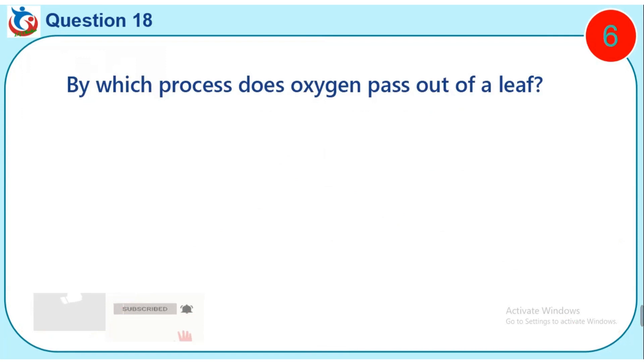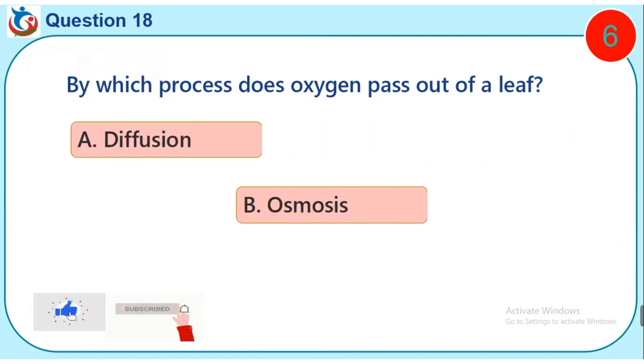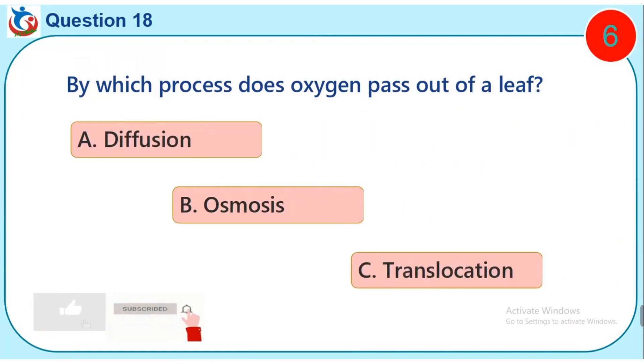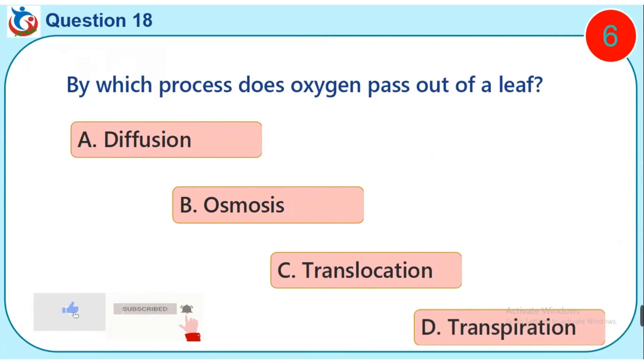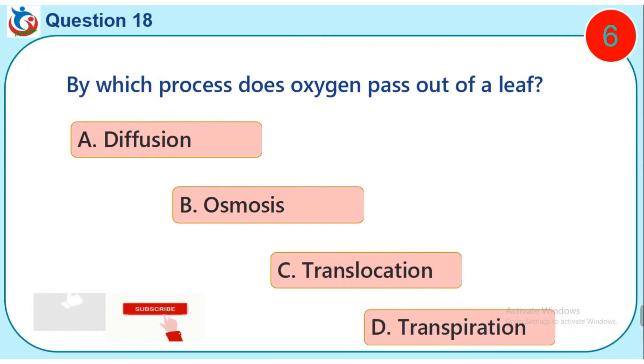Question 18. By which process does oxygen pass out of a leaf? A. Diffusion. B. Osmosis. C. Translocation. D. Transpiration.